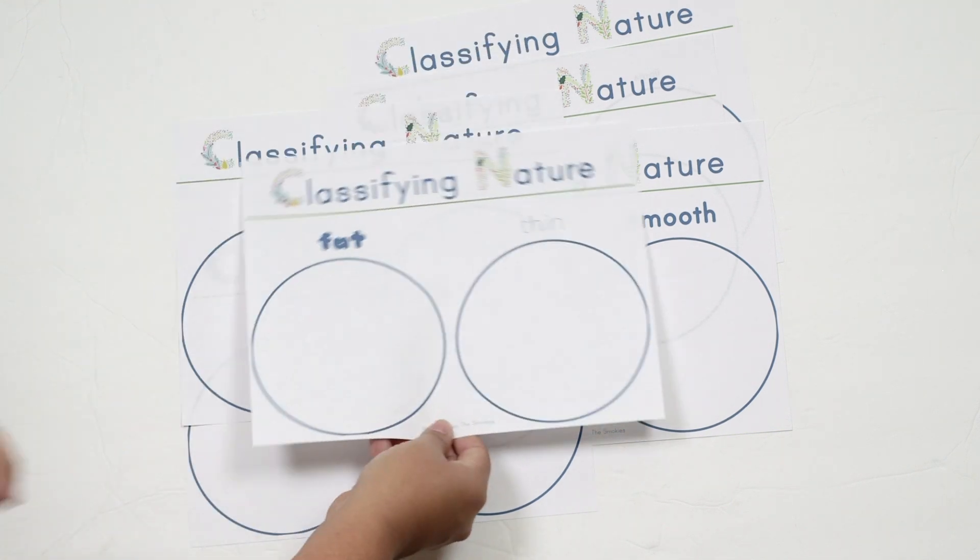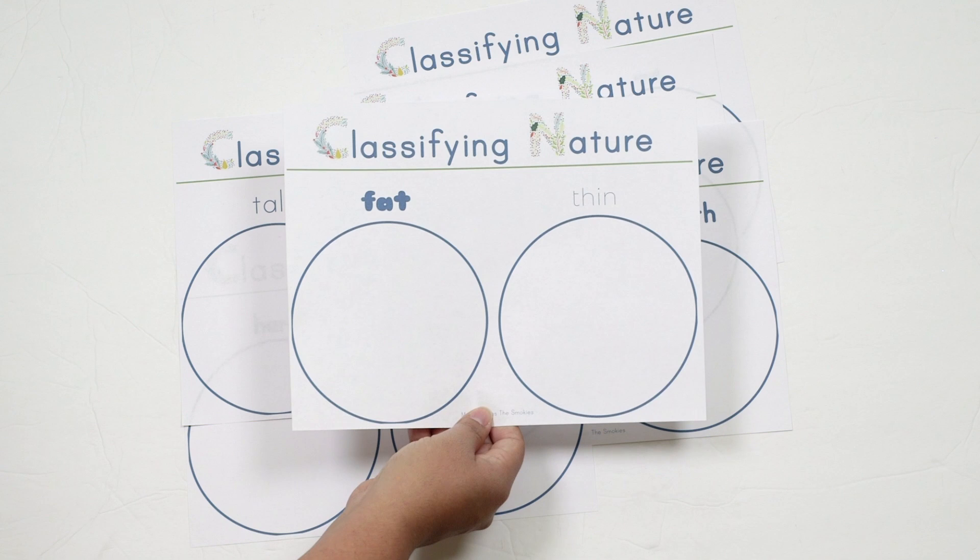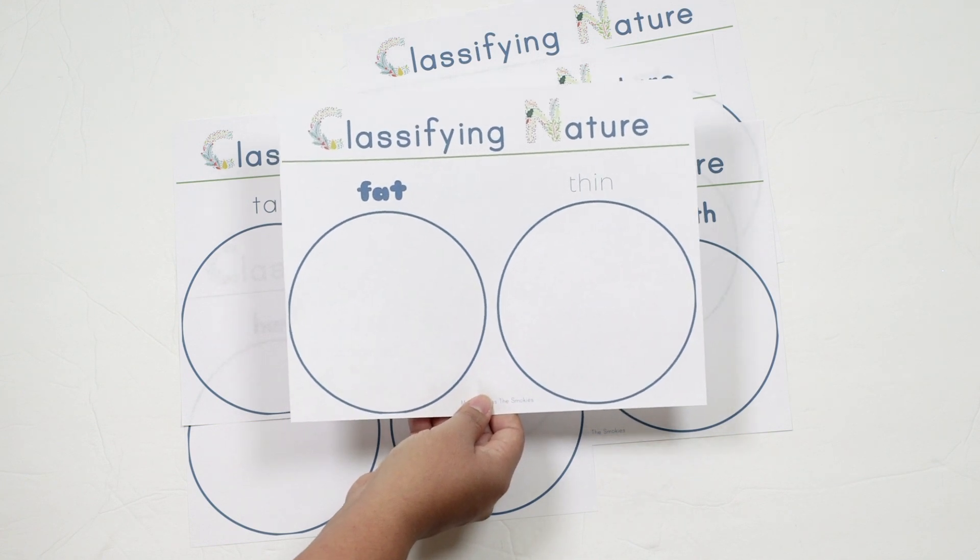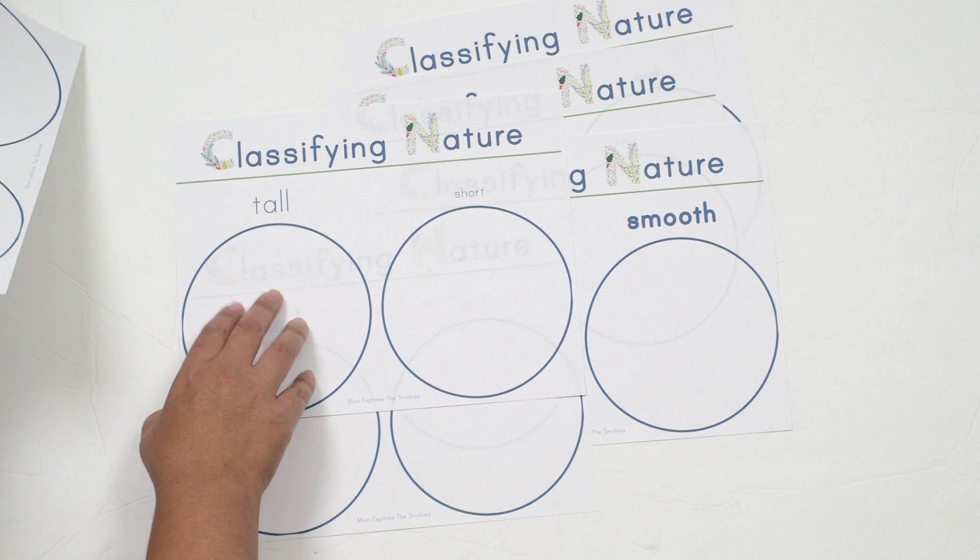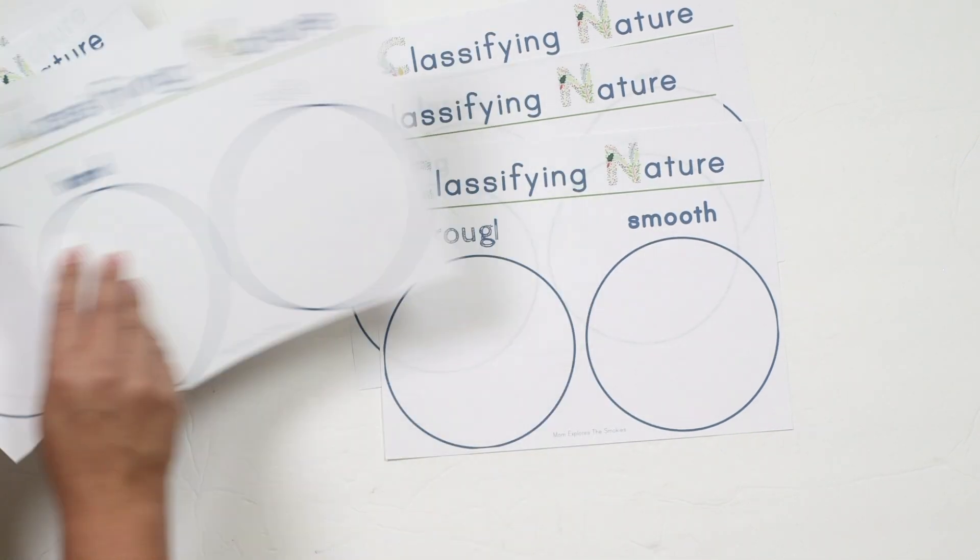So these are great sorting mats. If you're going to try to do this with your smallest ones, I would definitely pick one of these to start out with. Just one that you think they're going to be working on: tall, short, hard, soft, rough, smooth.